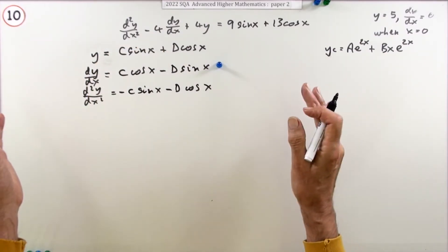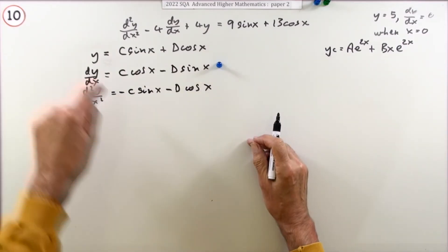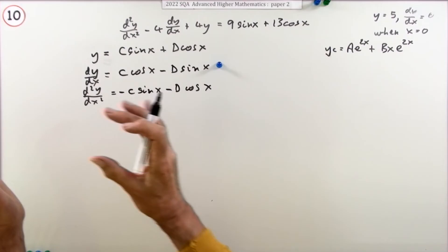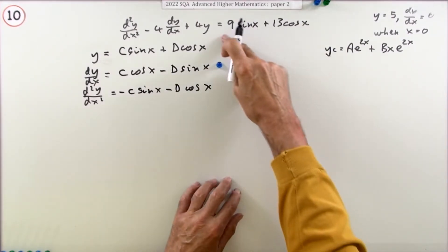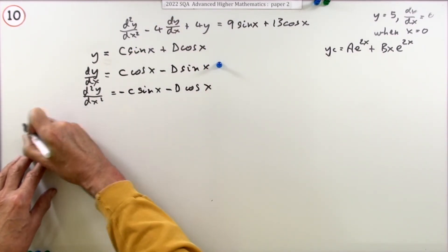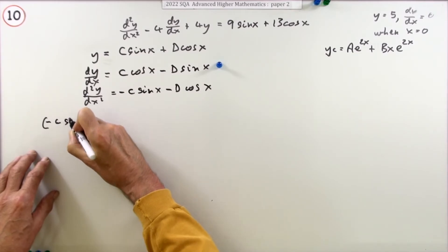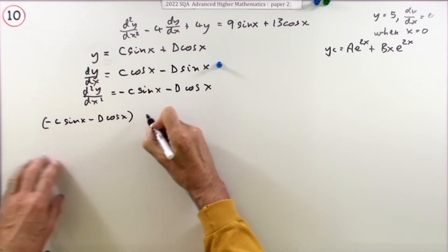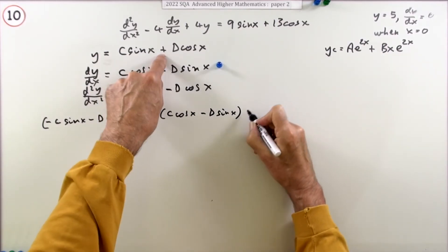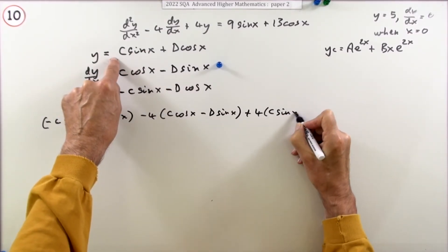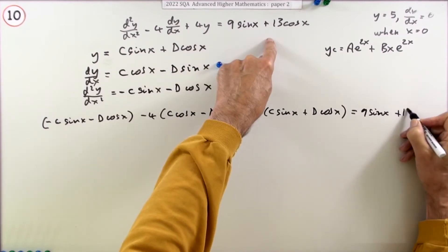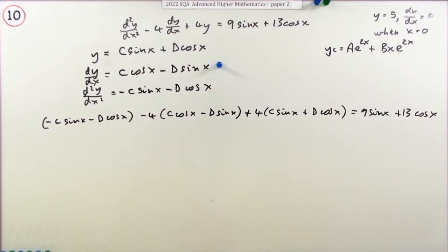Now substitute into the differential equation. Writing it out in full: (−c·sin(x) − d·cos(x)) − 4(c·cos(x) − d·sin(x)) + 4(c·sin(x) + d·cos(x)) = 9·sin(x) + 13·cos(x). Substituting correctly gets a mark.